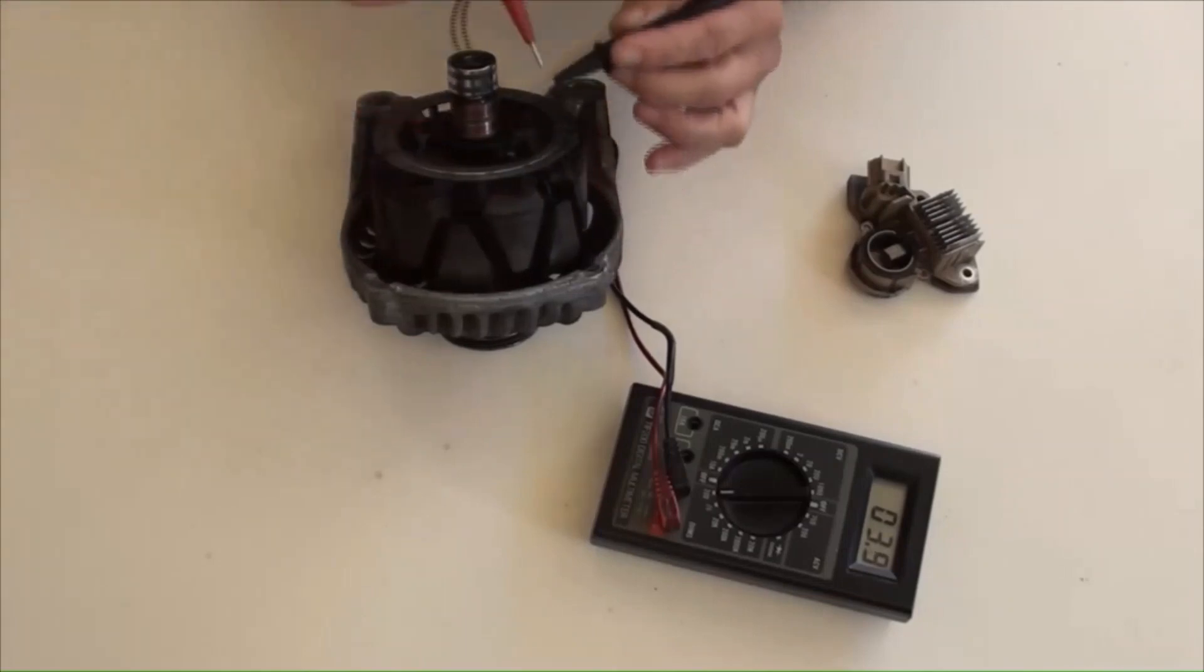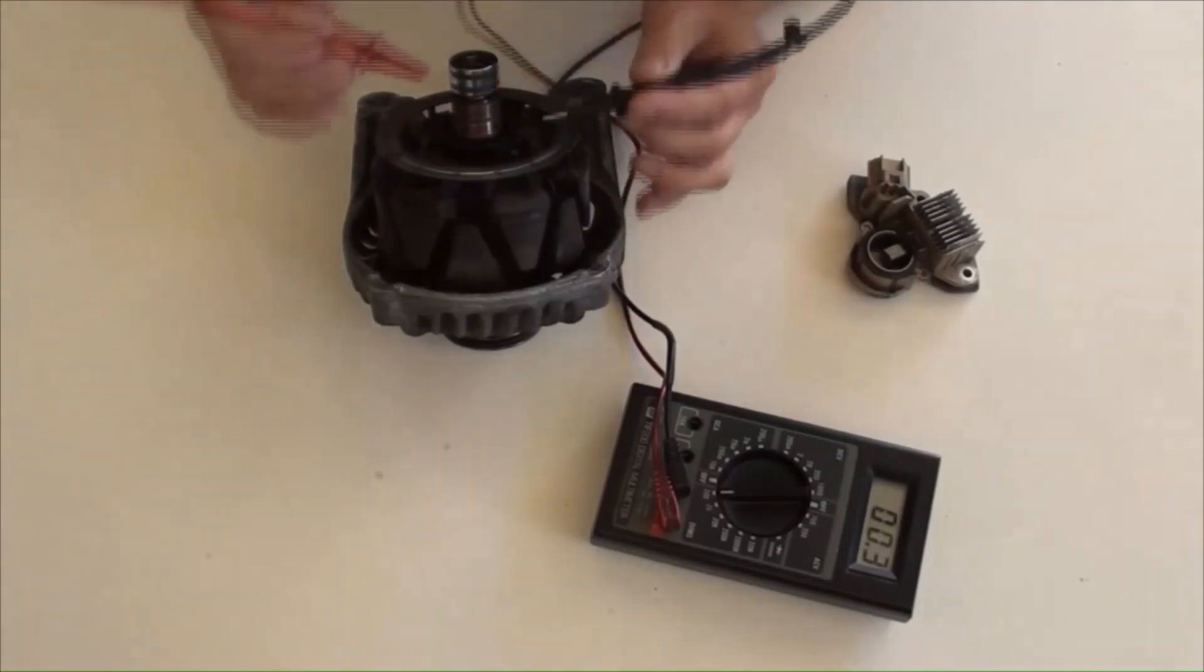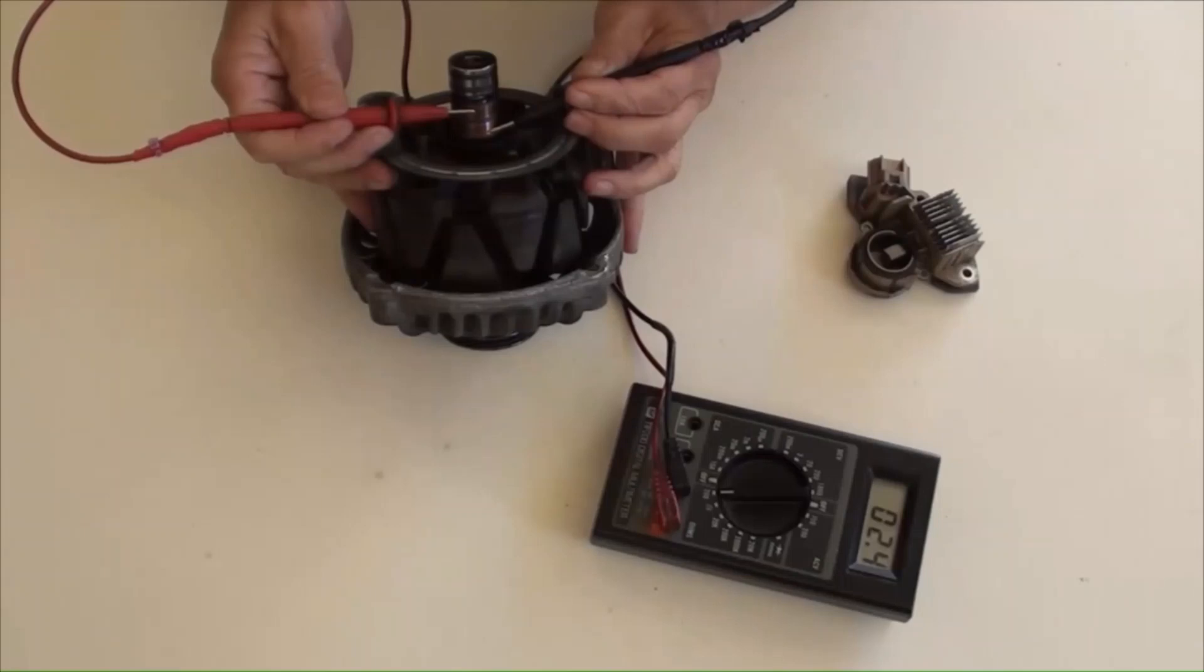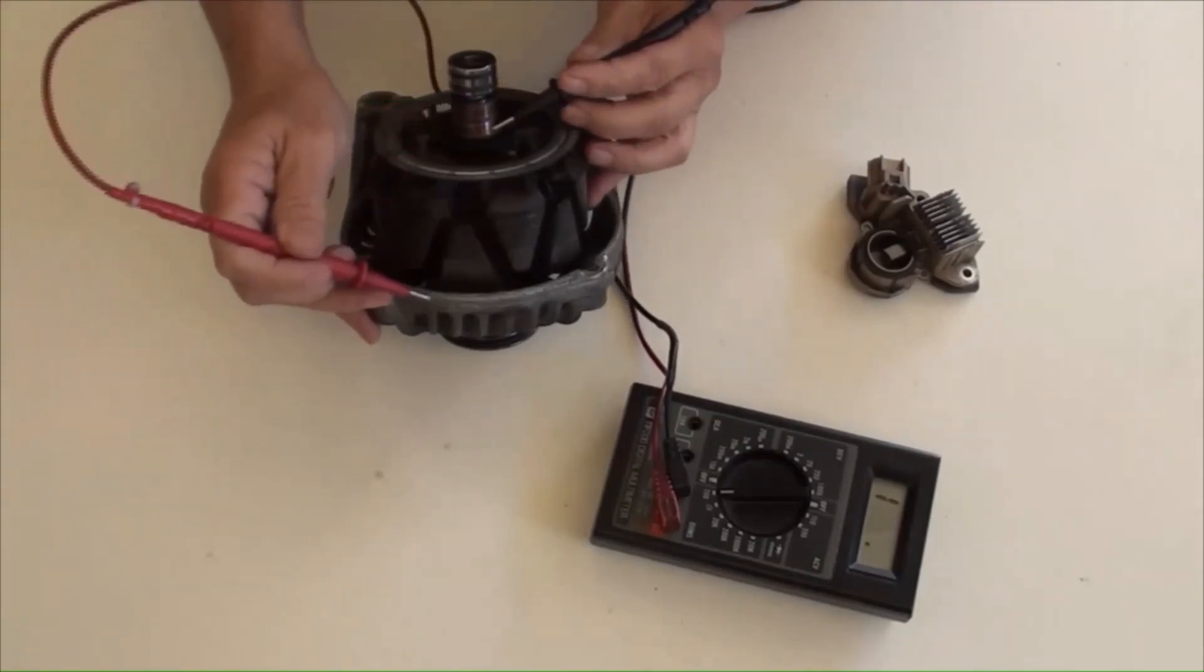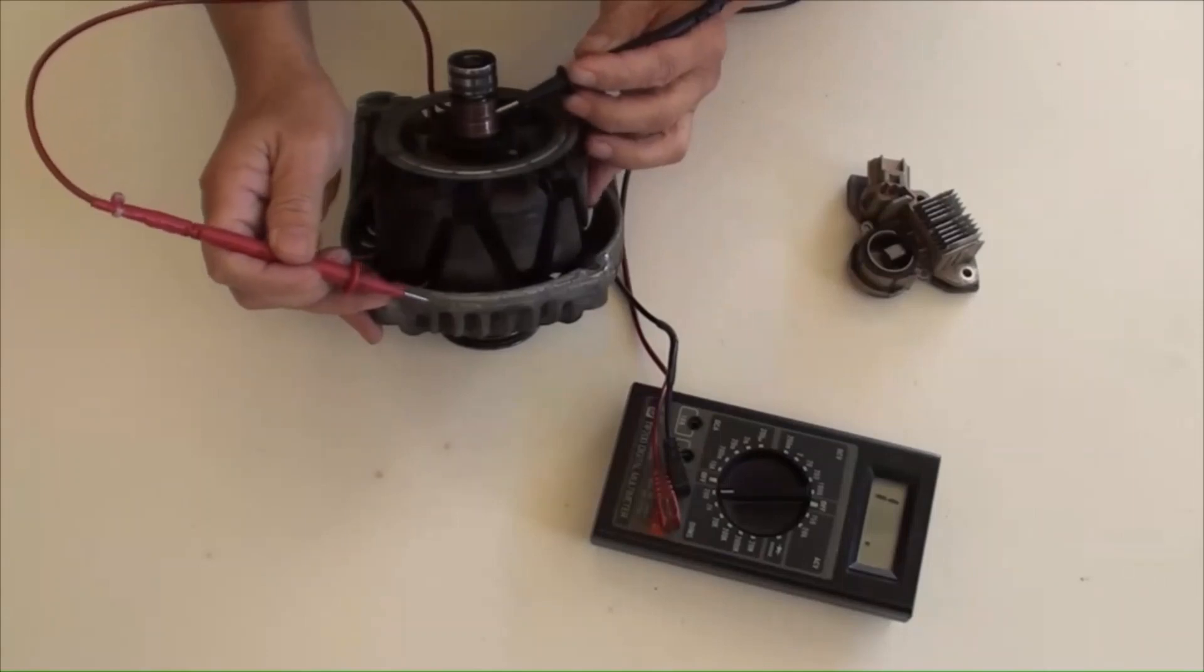Testing rotor's winding resistance. It should be a couple of ohms between two brass rings. Should not be continuance between any brass ring and rotor's body. All good.